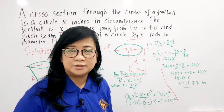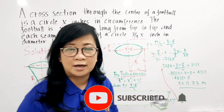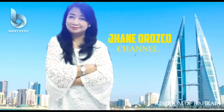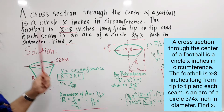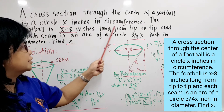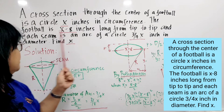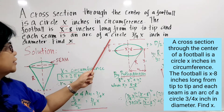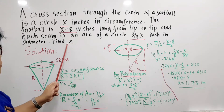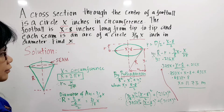Hello everyone. In today's problem solving, it involves the cross section of a circle and an arc of a circle. A cross section through the center of a football is a circle x inches in circumference. The football is x minus 8 inches long from tip to tip, and its seam is an arc of a circle 3/4 inch in diameter. Find x — that means find the circumference.